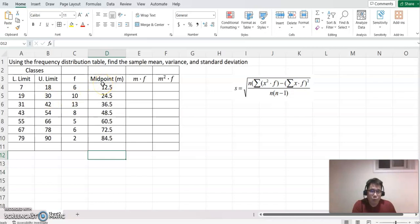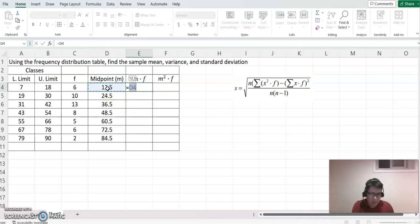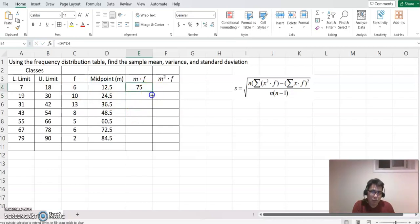We are going to add 12.5 six times and 24.5 ten times. That's the reason I make another column. We want to find out midpoint times each frequency. Now we got 75, go back to the right bottom corner, click, hold it and copy down.